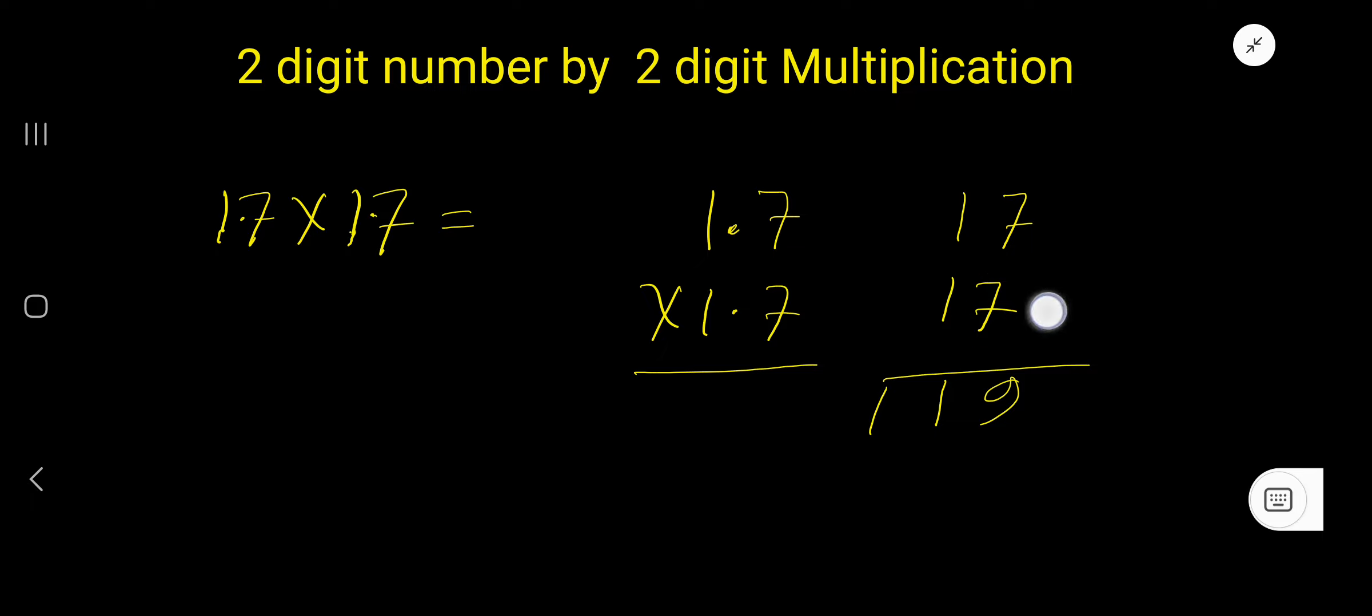Then you need to start with this 1, but 1 is in the second column, so the product will come to the second column. The first column will have a placeholder 0. 1 times 7 is 7, 1 times 1 is 1.